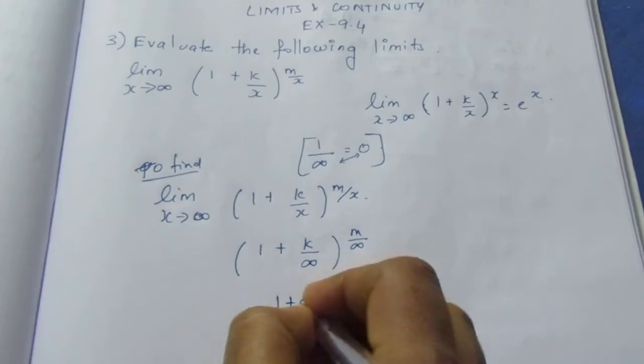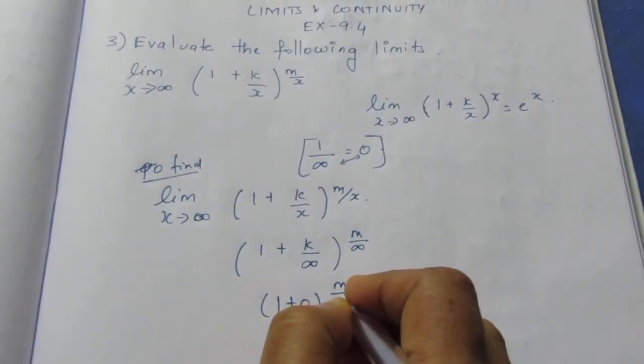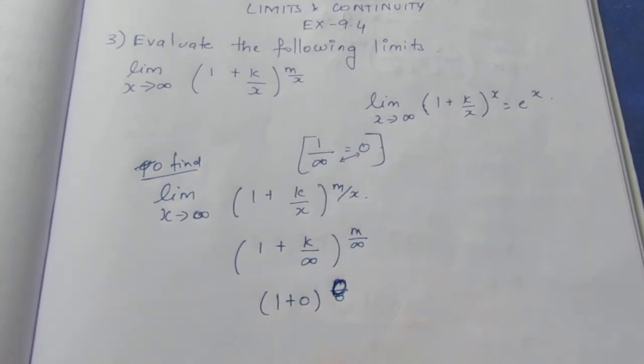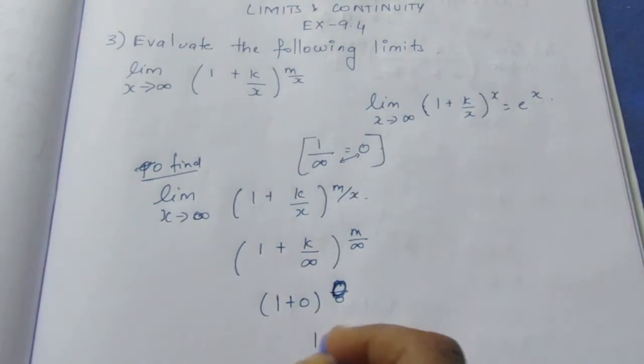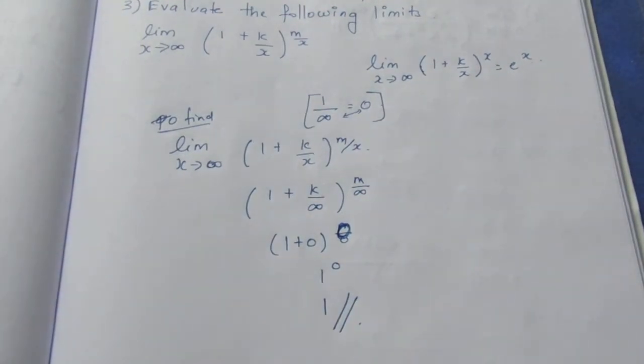So 1 plus 0, the whole power m by 0. Anything to the power 0, this is 1 power 0. What is anything to the power 0? The answer is 1.